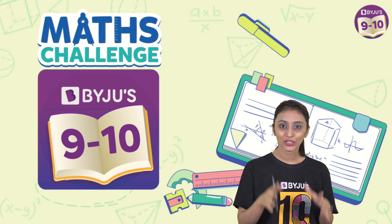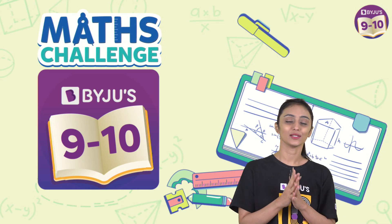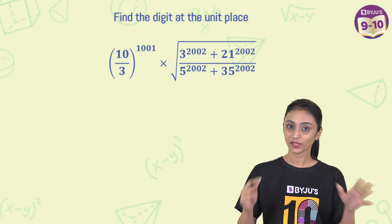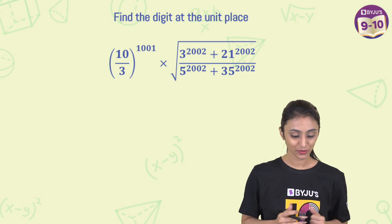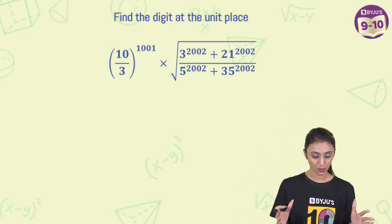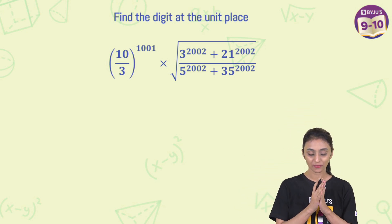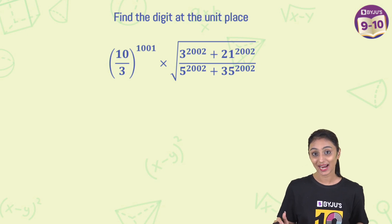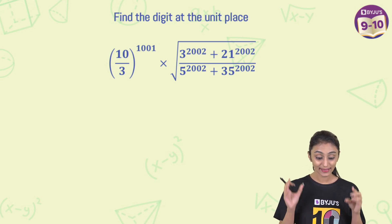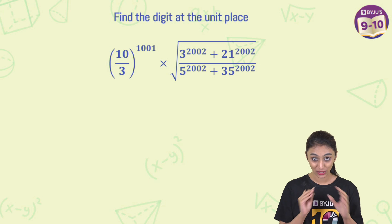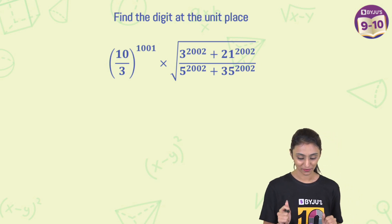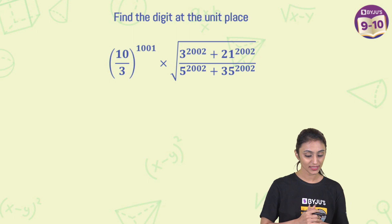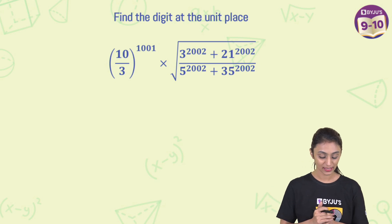Hey students, today I'm here to discuss the solution of the question that we gave you. I'm sure all of you must have tried this. It's a very interesting question. We are given an expression and we need to find out the digit at the unit's place. This looks tricky, but let's see how simply we can solve this just by using the basic laws of exponents.